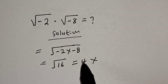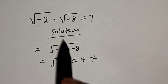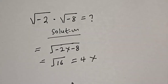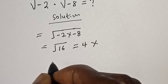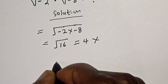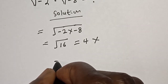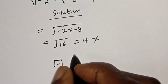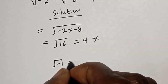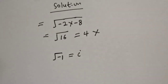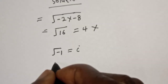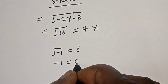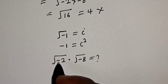Now let's see what the answer looks like. We have square root of minus 2 multiplied by square root of minus 8. Take note of this rule: square root of minus 1 is equal to i. Then, minus 1 is equal to i squared.